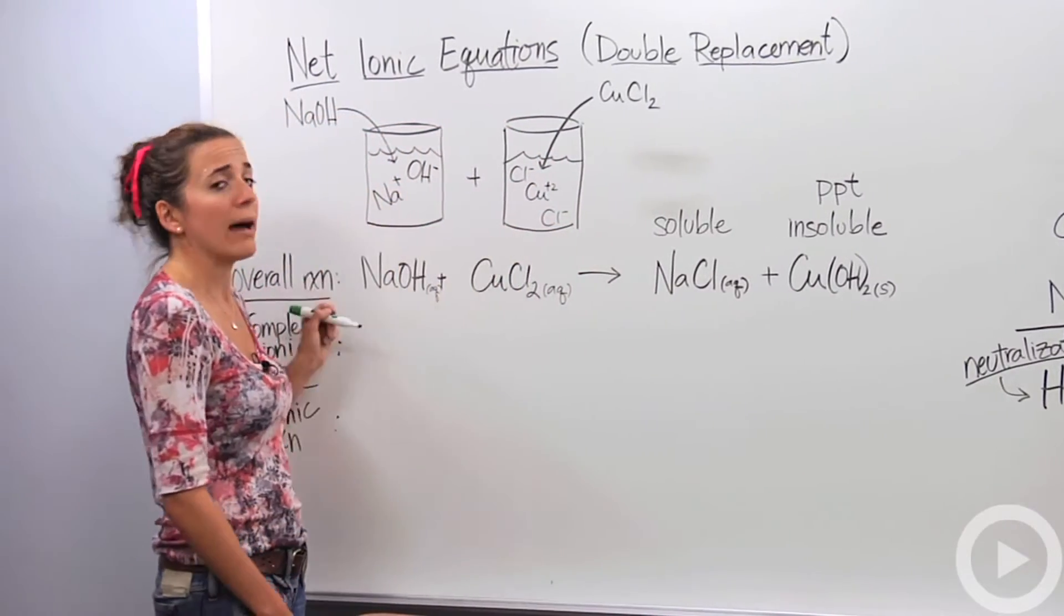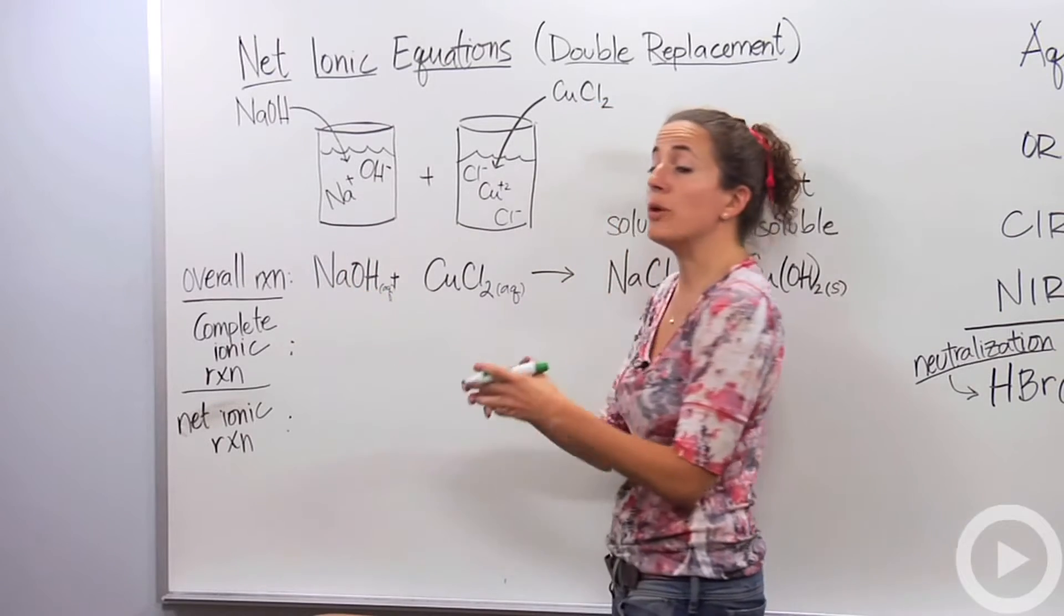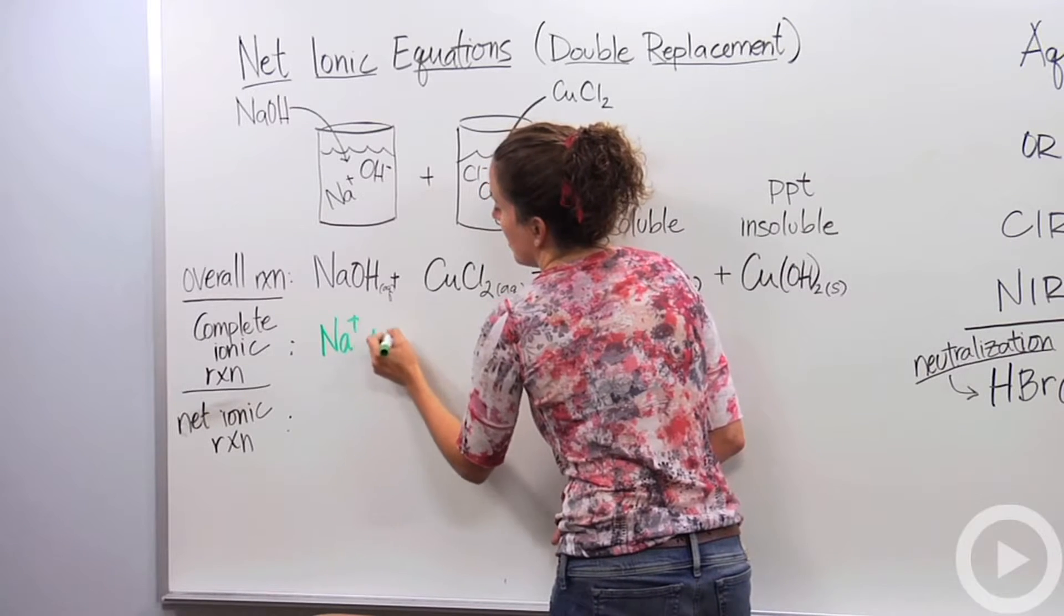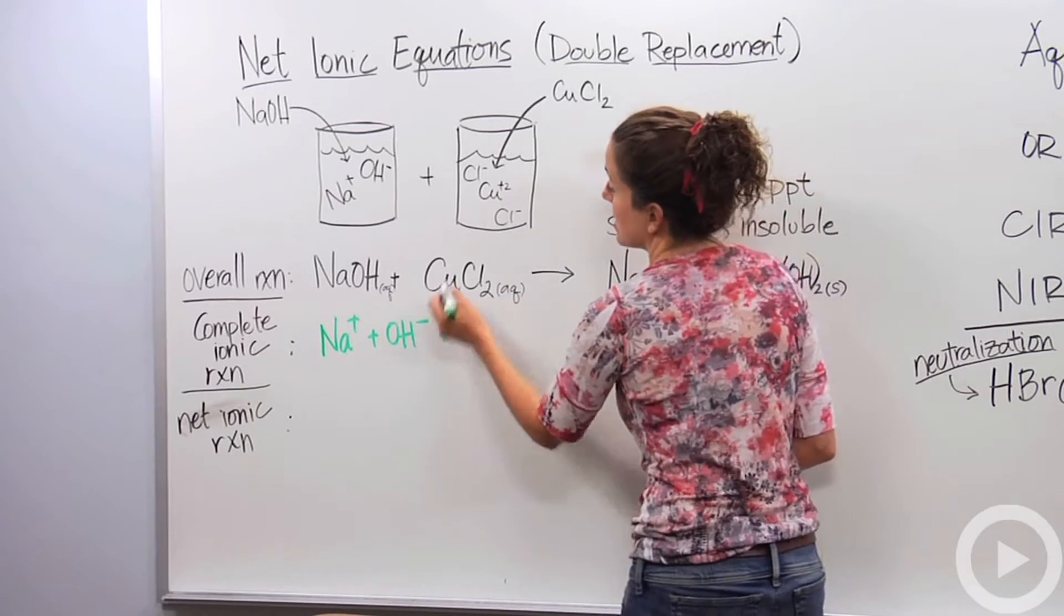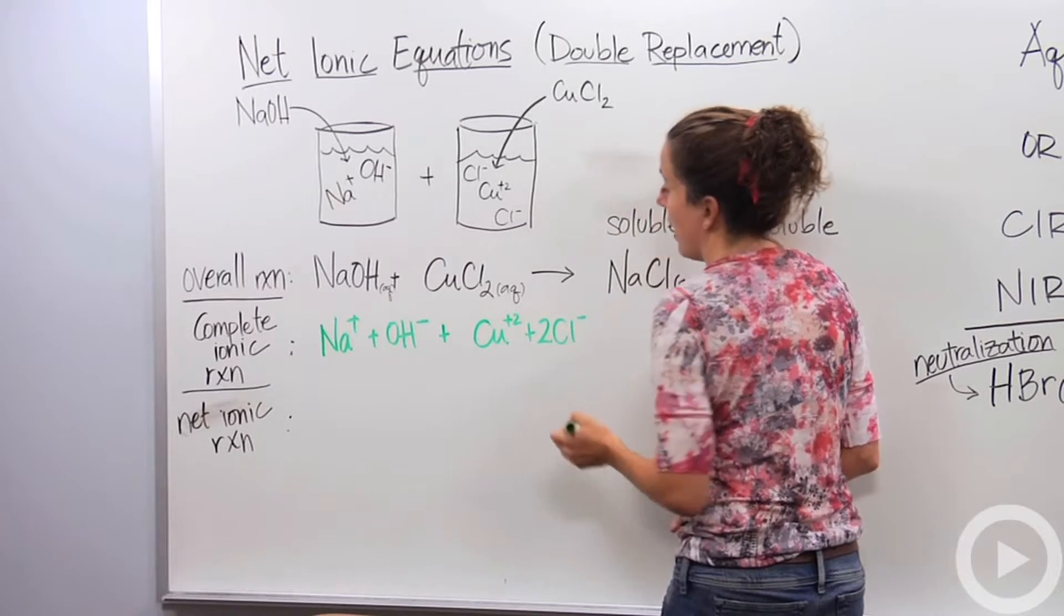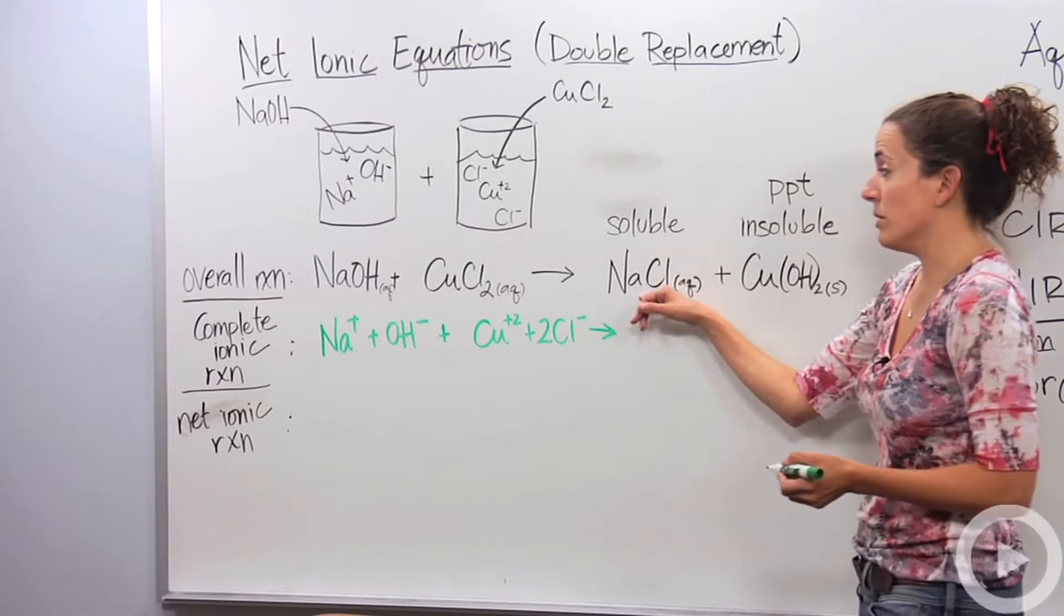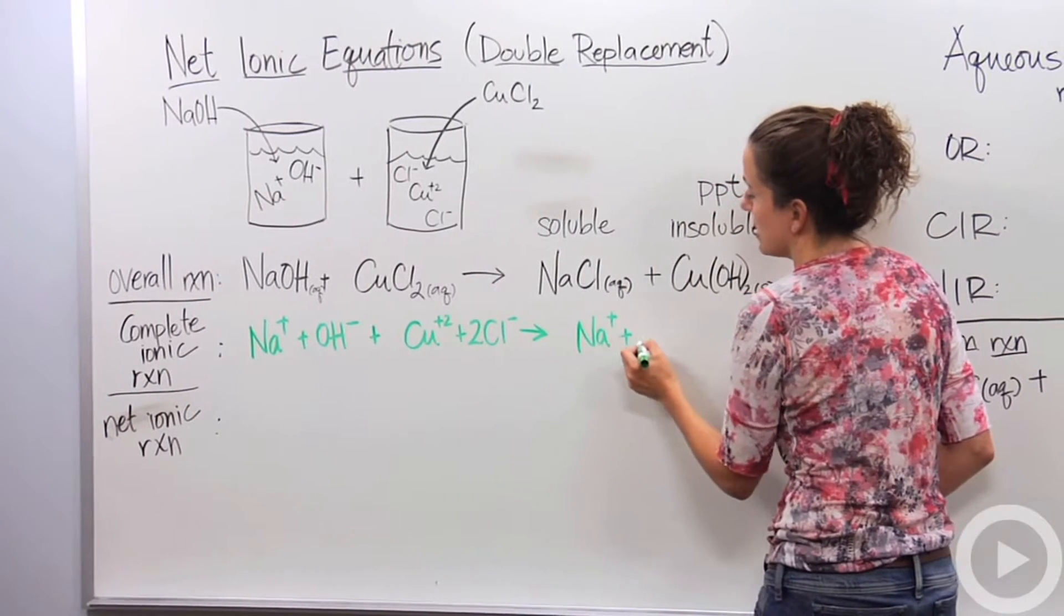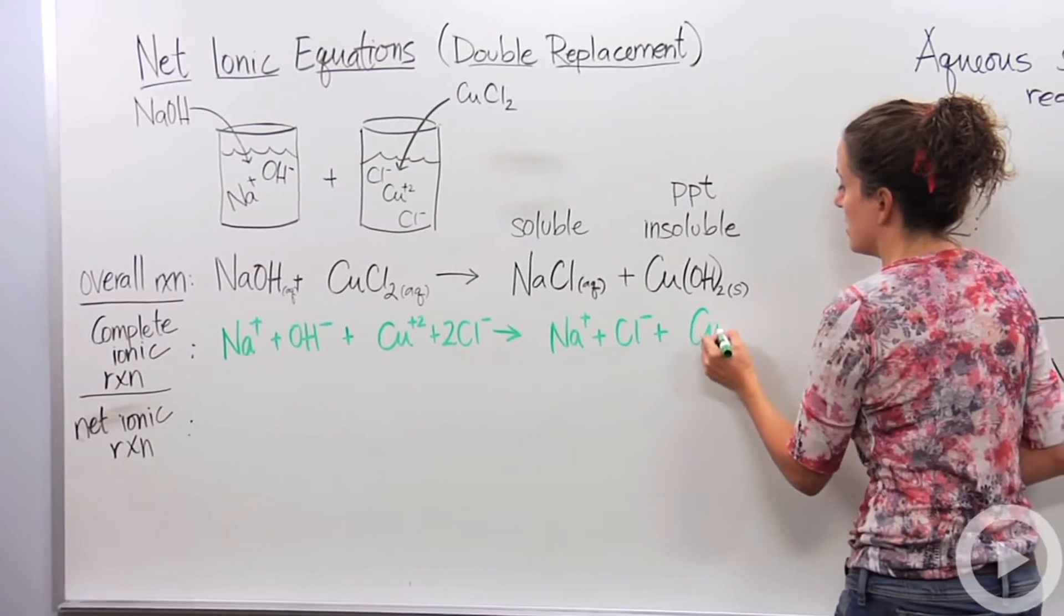So let's write this out more accurately to describe exactly what is happening. We look at the complete ionic reaction. We're going to break this up because we know that they separate in solution. Instead of writing NaOH, I'm going to write Na plus and OH minus. Then I'm going to break this up into its ions also. Cu plus two, plus two chloride ions. It's going to produce salt, which is soluble, broken up into its ions, Na plus plus Cl minus. And this is a solid so it stays together. CuOH2.